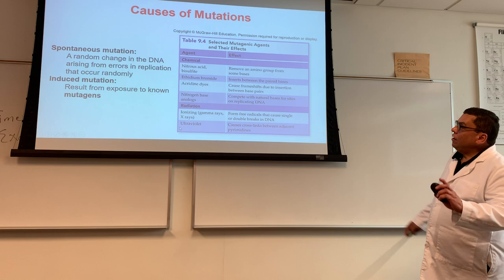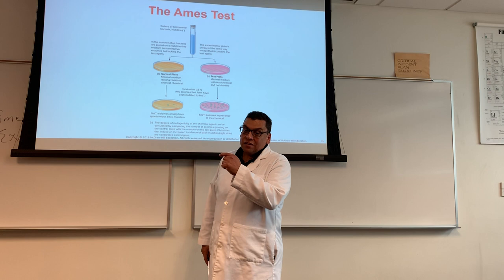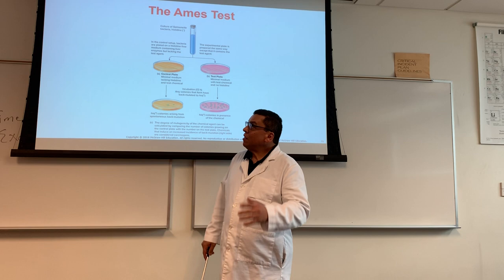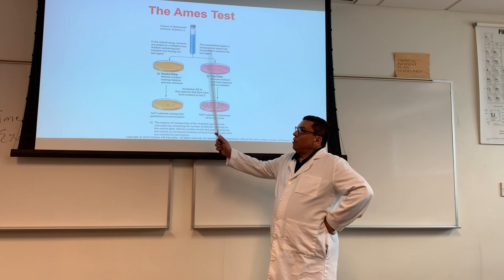There is a procedure used in the lab to figure out which chemical is a mutagen — of course, through experimentation. The Ames test is designed to have two plates: a control plate and a test or experimental plate. Both plates are exactly the same, with one exception — the test plate will have the chemical that you're testing. For example, does ethidium bromide cause genetic mutations?